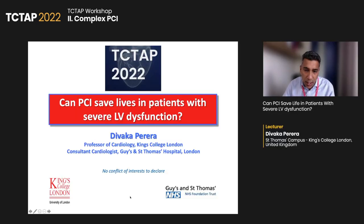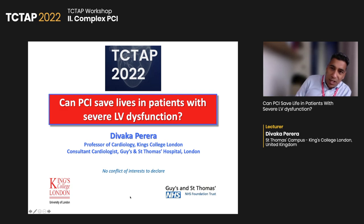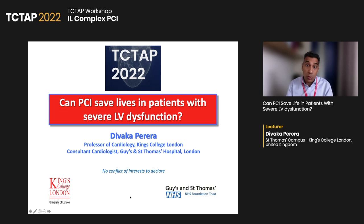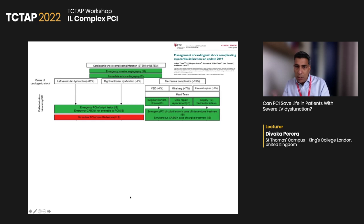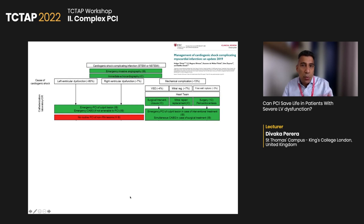Thank you, Dr. Park. Thank you to all the TCT organizers for giving me this opportunity. The topic I was asked to talk on was: can PCI save lives in patients with severe LV dysfunction? It's useful to think of LV dysfunction in two different contexts or two different types of acuity. The first part of my talk will be on whether PCI has a role in improving survival in patients with acute LV dysfunction — cardiogenic shock. I don't need to remind everyone of the SHOCK trial results, as that trial has been in our minds for several decades. It formulates some of the green parts of this management algorithm from ESC, which is that we really need to do angiography early.